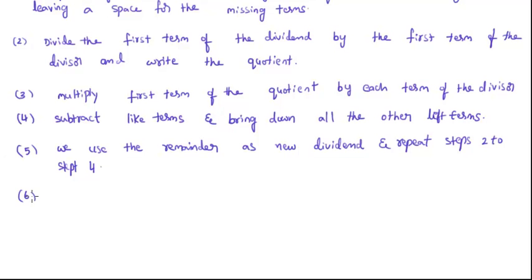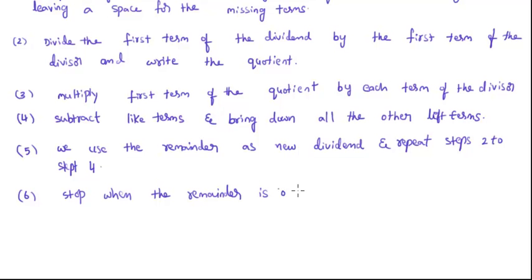And the last step is: stop the division when the remainder is 0, or there is no term in the remainder into which the first term of the divisor will divide.